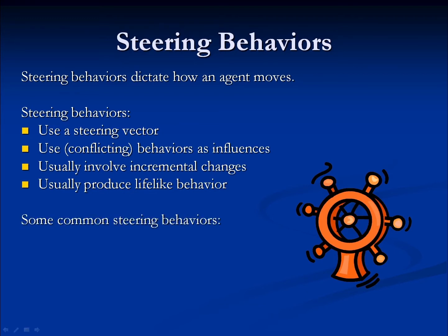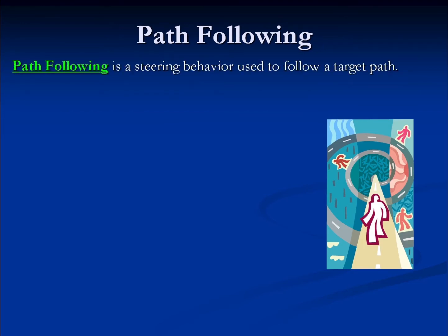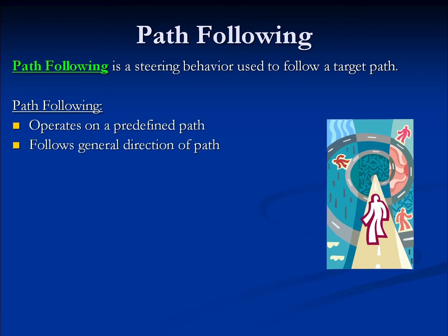A few common steering behaviors include individual path following, which is a simple steering behavior that pushes an agent toward a path; crowd path following, which extends individual path following by adding a behavior that attempts to prevent collisions between agents; and flocking, a more complex behavior that attempts to mimic the behavior of flocks and swarms. Path following is a behavior we use to follow a target path after it's been established, and it always operates on a predefined path, following the general direction of that path by applying a force in that direction any time an agent veers too far from it.